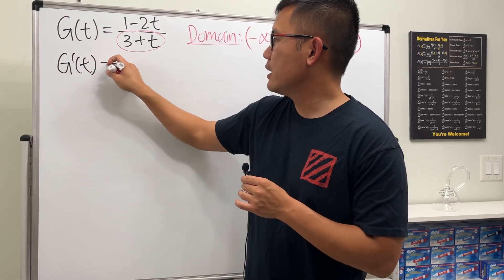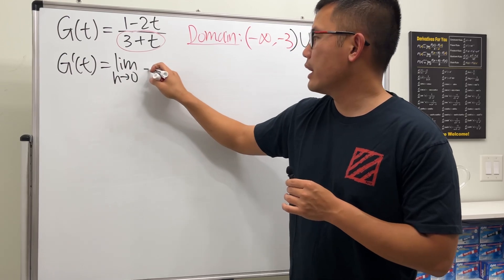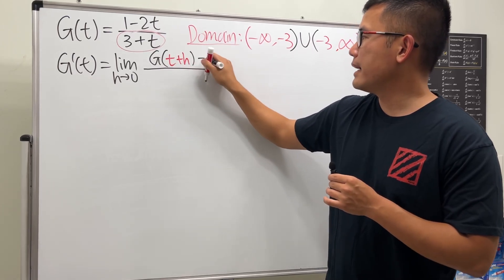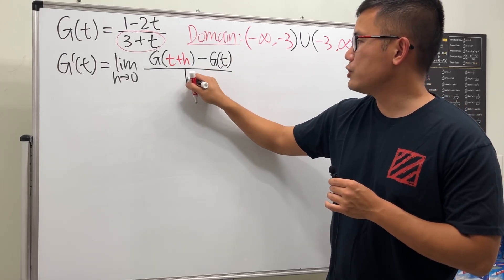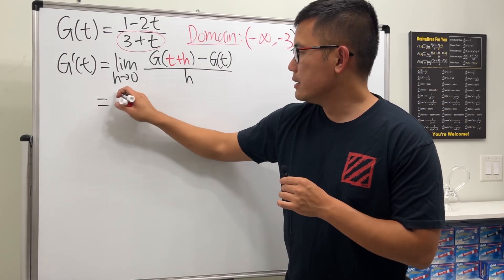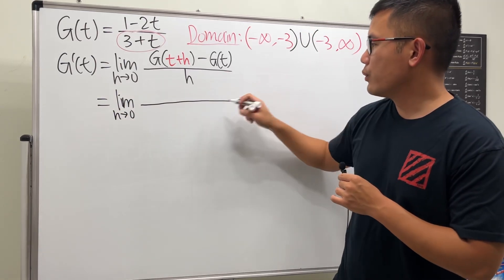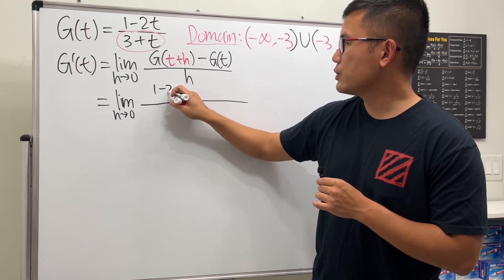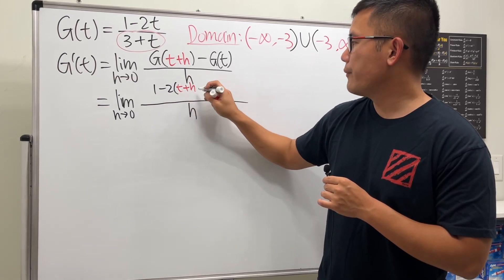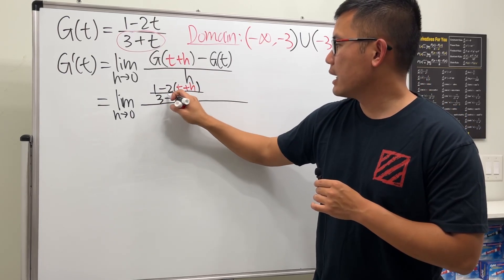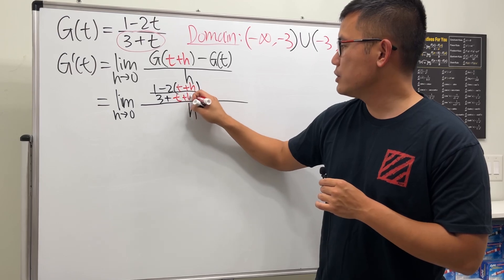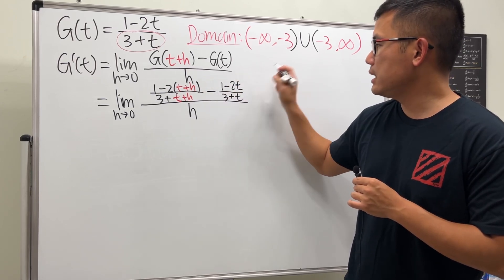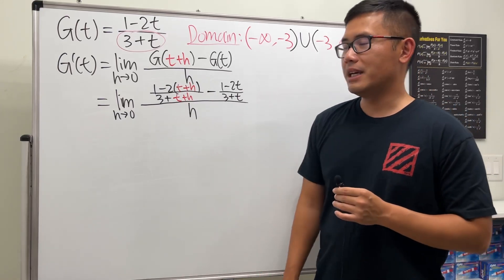Now let's find g'(t). This is the limit as h approaches 0 of [g(t + h) - g(t)] / h. We substitute t + h into the function, giving us [1 - 2(t + h)] / (3 + t + h) minus the original (1 - 2t) / (3 + t), all over h. That's the setup.